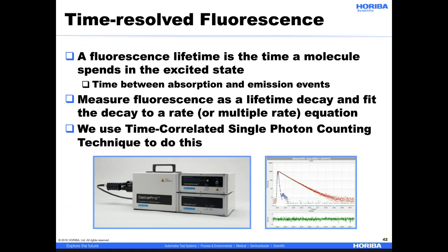Which leads us into the broader topic of time-resolved fluorescence. The fluorescence lifetime is the time a molecule spends in the excited state. There are two main methods used to measure fluorescence lifetime. TCSPC, or time-correlated single photon counting, is the most common technique today, also called time-domain fluorescence lifetime. Phase modulation, or frequency-domain fluorescence lifetime, was actually the original method used early on. Today, I will only be talking about TCSPC, where we measure the lifetime as a decay and fit the decay to a rate equation.